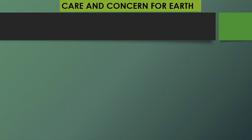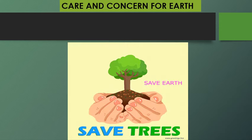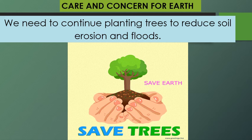Many human activities affect the water forms and landforms of Earth, and the more these resources are destroyed, the less our resources become. To take care of our Mother Earth, we need to continue planting trees to reduce soil erosion and floods. Illegal cutting of trees destroys the homes of different animals. Without trees, floods and landslides may occur. Kaingin, or the burning of trees, can also destroy forests and mountains.